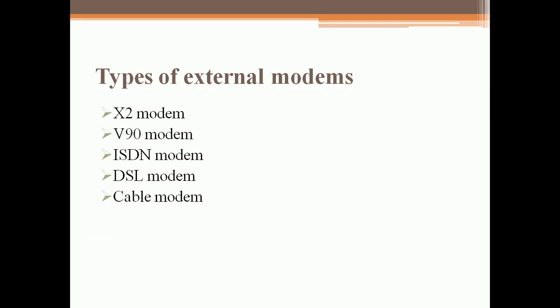Here are the further examples of external modems: X2 modems, V90 modem, ISDN modem, DSL modem, cable modem. X2 modem delivers data up to 56,000 bits per second and offers faster internet access.